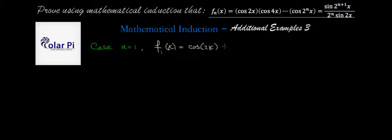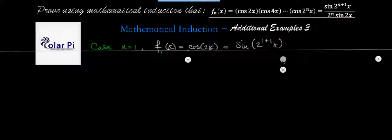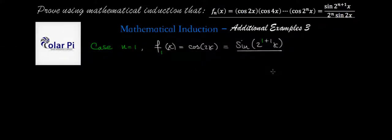But then the right-hand side would require that cosine two x be equal to this quotient where n is replaced with one. And so that's sine of two to the power of one plus one times x. And in the denominator we'd have two to the first, and then times sine of two x.